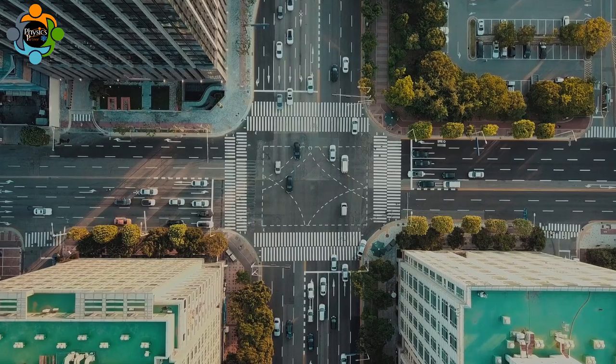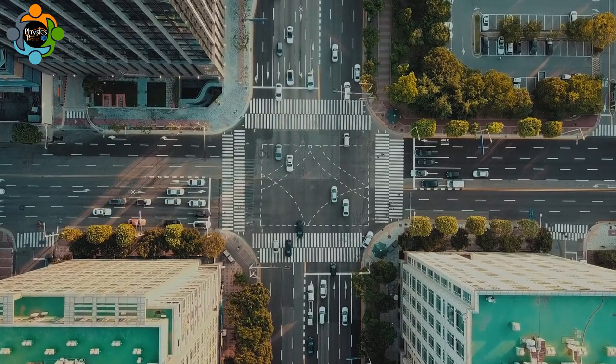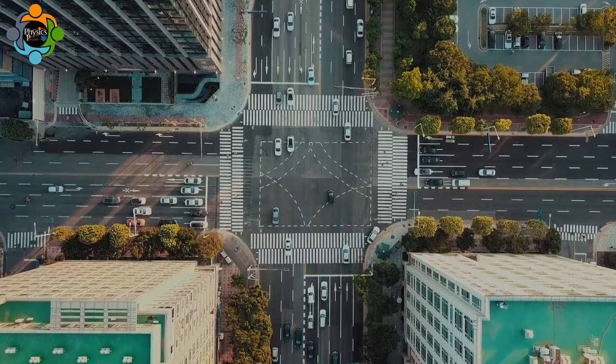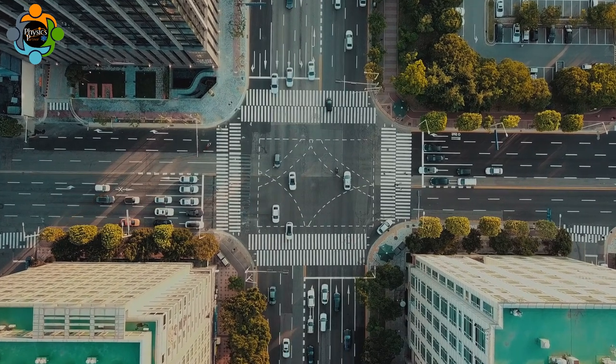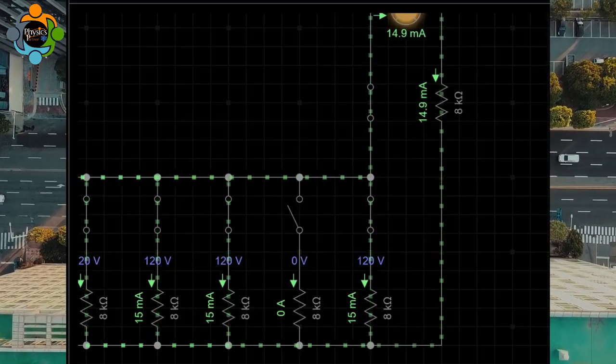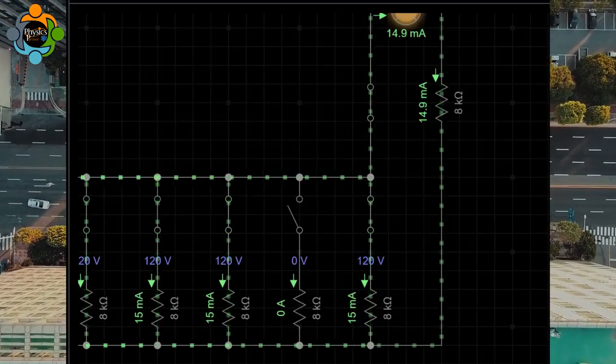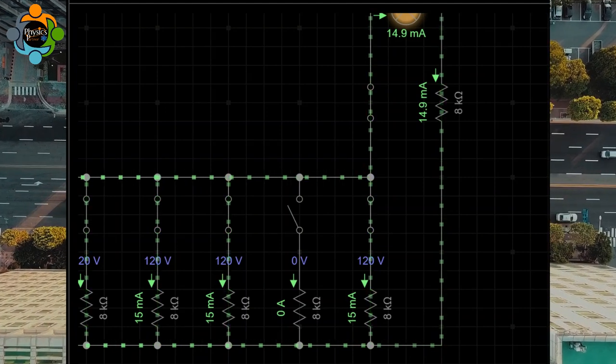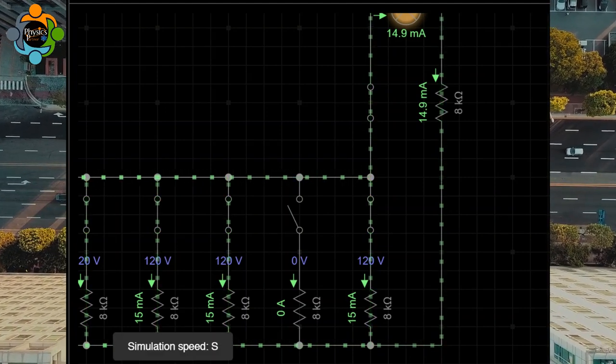So just like our road, where adding more lanes with checkpoints in parallel helps keep traffic moving, adding resistors in parallel provides multiple paths for the electrons, making it easier for the electrical current to flow.